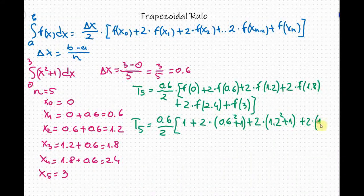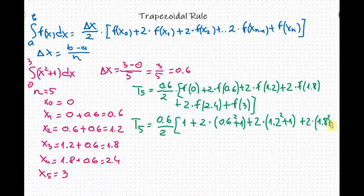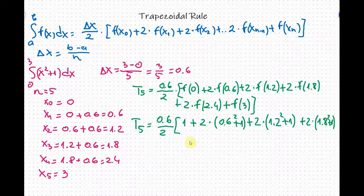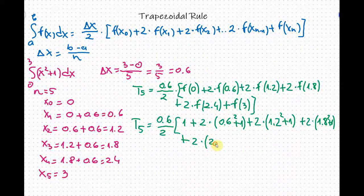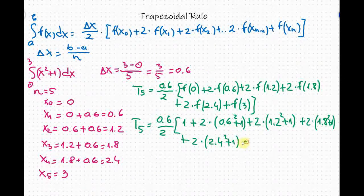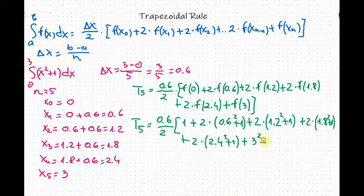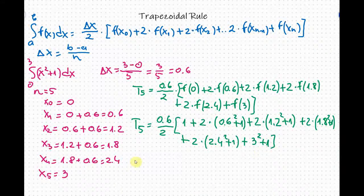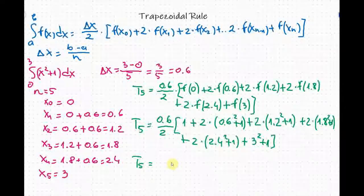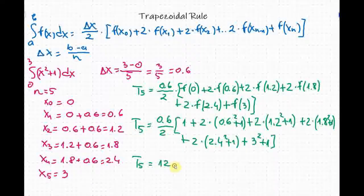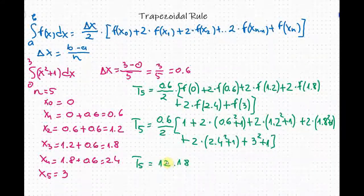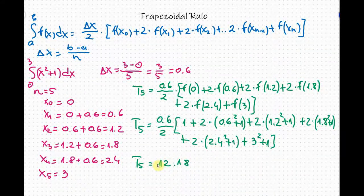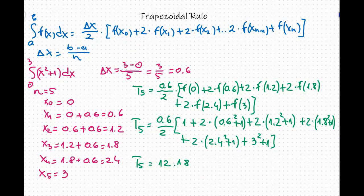If we calculate this everything we will get a final answer of 12.18 which is the approximate area under a curve. This is how we do trapezoidal rule. Thanks for watching!